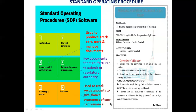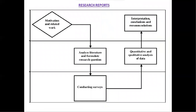The next topic is research reports, which are also controlled by TIMS. This is the flowchart for the research process. Research starts from motivation and related work; then literature is surveyed and analyzed by the research scientist, who formulates a research question. Based on that question, surveys are conducted. After completion, results are presented and analyzed qualitatively and quantitatively. Finally, results are interpreted using graphs and data charts, and research scientists draw conclusions and make recommendations.